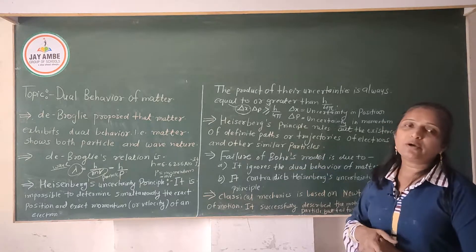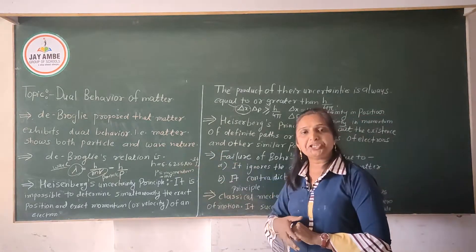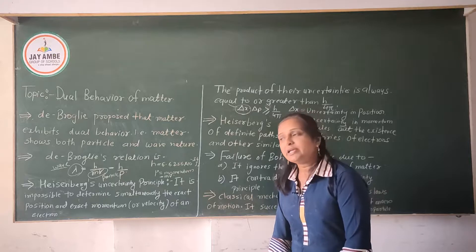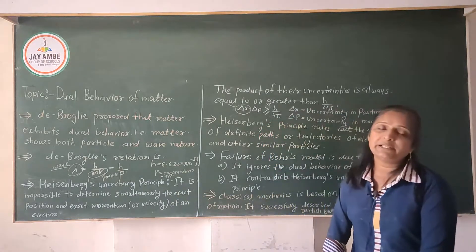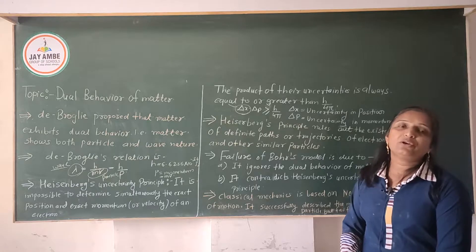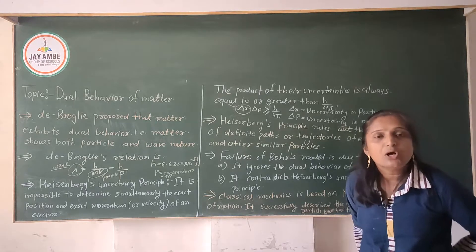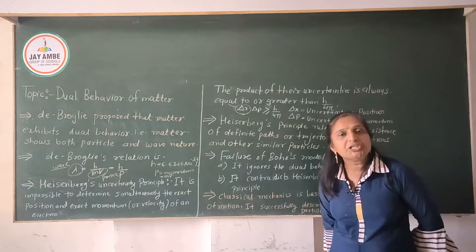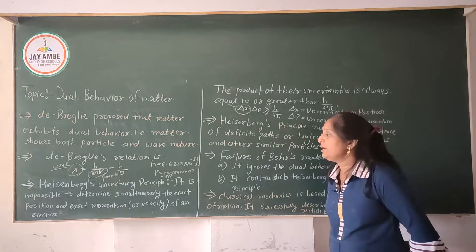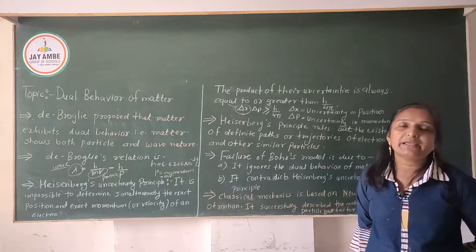The dual nature of the behavior of matter — with the de Broglie relation lambda equals h upon mv — and Heisenberg's uncertainty principle together show that for any electron going around the nucleus, its exact position and its momentum cannot be simultaneously determined.